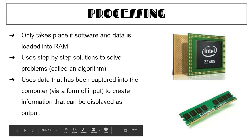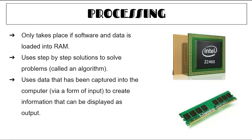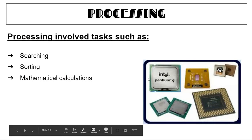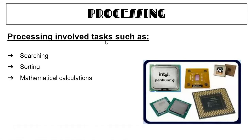Processing only takes place if software and data is loaded into RAM. It uses step-by-step solutions called an algorithm to solve problems, and uses data captured via input to create information displayed as output. Processing involves tasks such as searching, sorting, and mathematical calculations — done by your central processing unit.